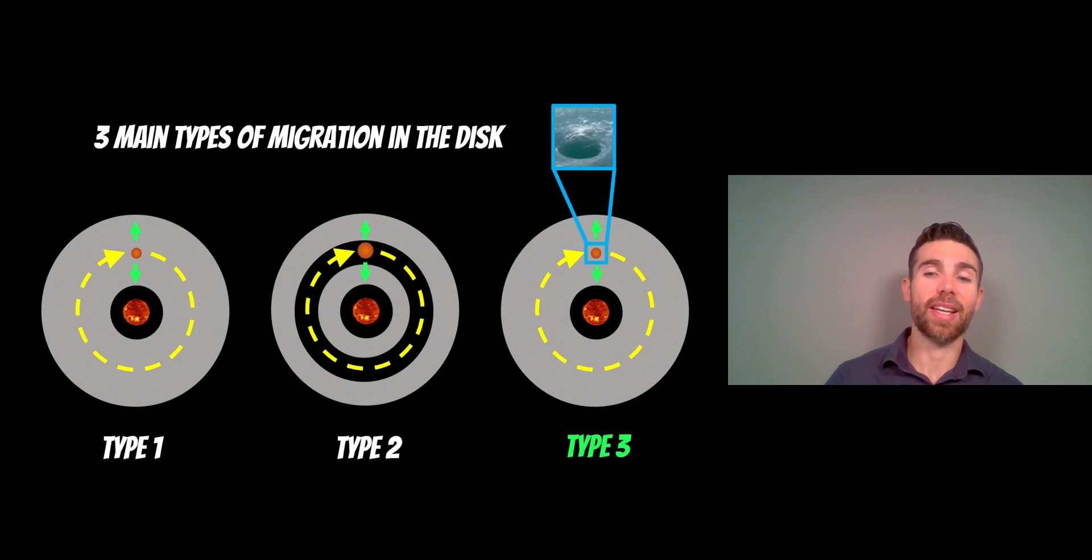Now Type 3 is the same as Type 1, same sort of planet, same sort of disk. There's no main structural change to it. But you have a more turbulent flow in the disk. Remember, it's a gas disk. You've got like vortices there, eddies, and the planet interacts with those and changes the way that it moves around in the disk. So that's Type 3.